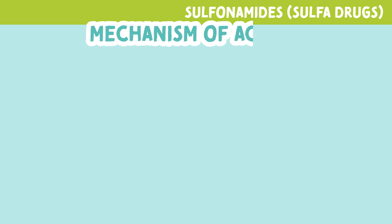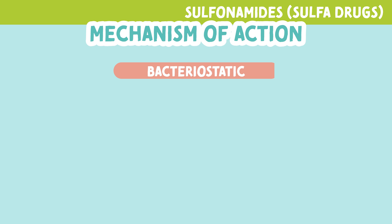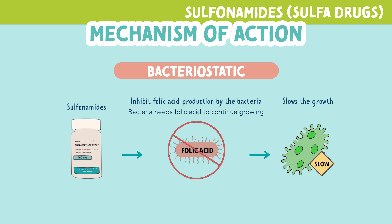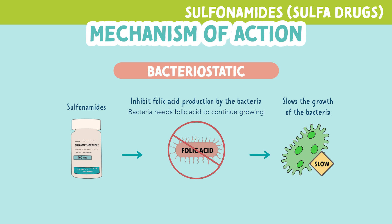Let's look at the mechanism of action for sulfas. They inhibit folic acid production by the bacteria. The bacteria needs folic acid to continue growing, so this ultimately slows the growth of the bacteria in the body. Remember, sulfonamides are bacteriostatic, meaning they slow the growth of the bacteria.